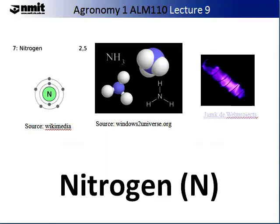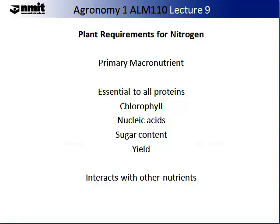Nitrogen is classed as a primary macronutrient and is found in relatively high concentrations in plants. It is essential to the production of all proteins, required in the production of chlorophyll and nucleic acids. Sugar content and yield can be affected if nitrogen is deficient, and finally it interacts with other nutrients.